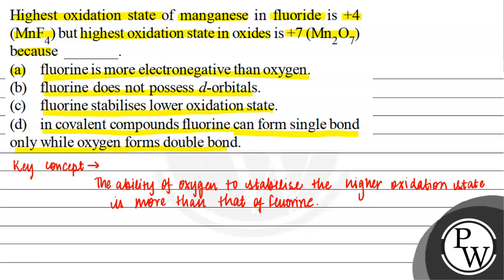The ability of oxygen to form multiple bonds with metal favors Mn2O7.